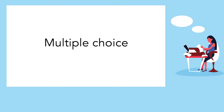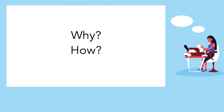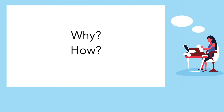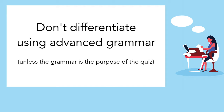Even multiple choice questions can reveal complex knowledge if the students must analyze a complex meaning to select the correct alternative. Asking why a phenomenon occurs, or how something occurs or is connected to something else, can reveal deeper understanding or misunderstanding when the alternatives are clear. We know teachers have good intentions, but sometimes we can get so carried away with creating ingenious questions that we accidentally set traps by using two similar terms or too-clever grammar.